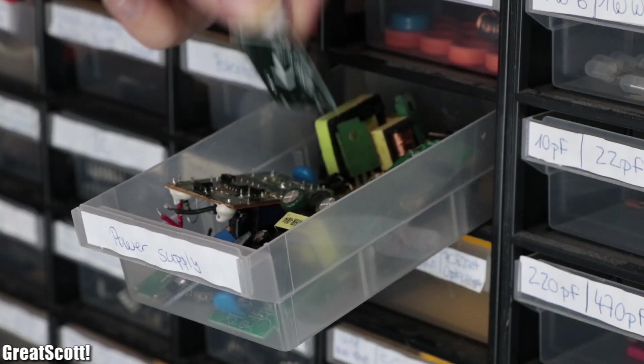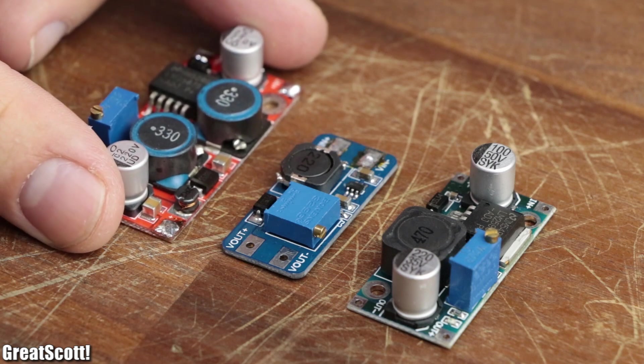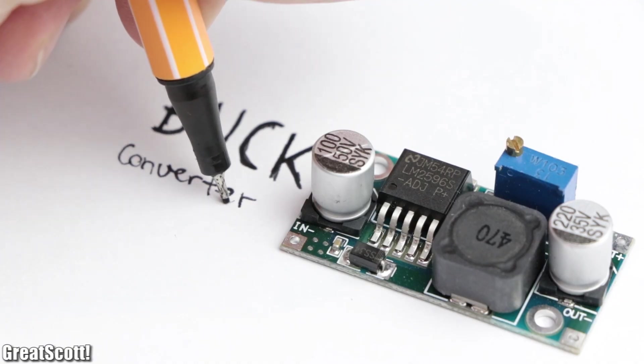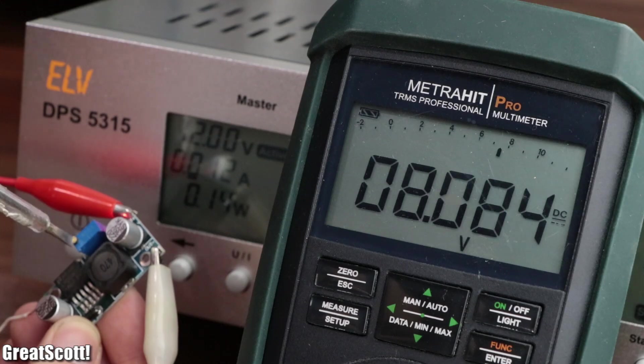When it comes to powering your electronics projects, you might be familiar with these three boards. The first one is a buck converter, which can output a variable output voltage lower than its input voltage.